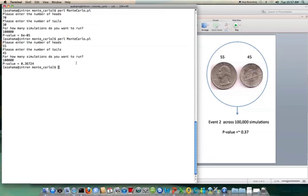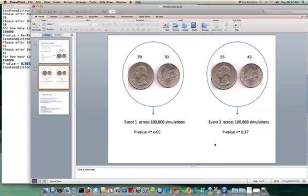Okay. So we see here that for 70, 30 the p-value is e to the power minus 05 and for 55, 45 it's 0.37.